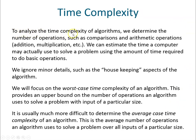To analyze the time complexity of an algorithm we determine the number of operations such as comparisons and arithmetic operations — addition, multiplication, and division. We can estimate the time a computer may actually use to solve a problem using the amount of time required to do these basic operations. We will mainly focus on the worst-case time complexity, meaning at the worst case, how long will it take to execute the algorithm. The worst-case complexity provides the upper bound on the number of operations an algorithm uses to solve a problem with input of a particular size.